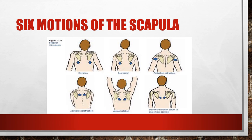To visualize scapular rotation: place your hands in front of you and bring them upward and outward — that models upward rotation where the bottom part moves upward and outward. Downward rotation is the reverse: the bottom of the hands move downward and close to midline.